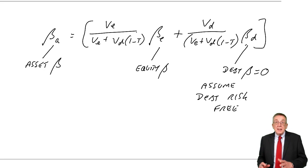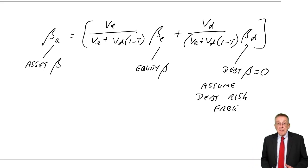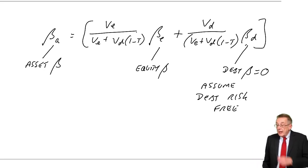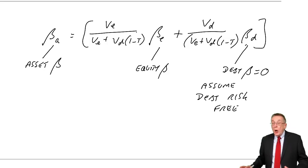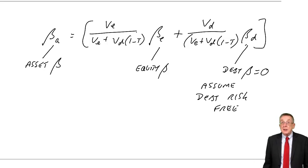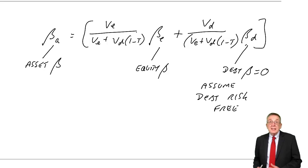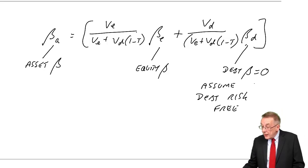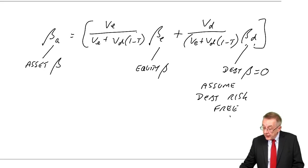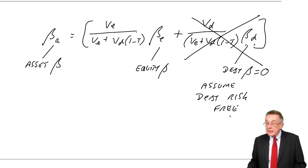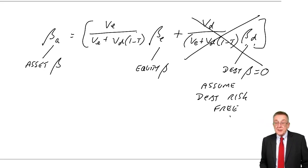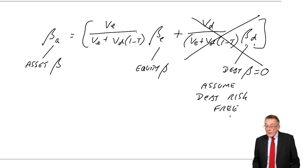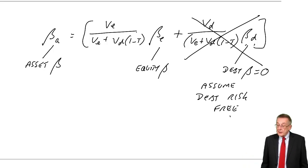If you're using this formula in the exam, we assume debt is risk-free and therefore the debt beta is zero, which means all of that second term disappears. This simplifies the formula a lot.